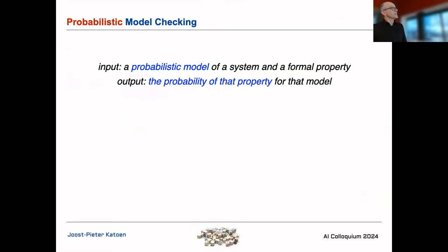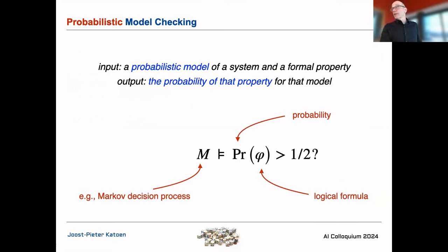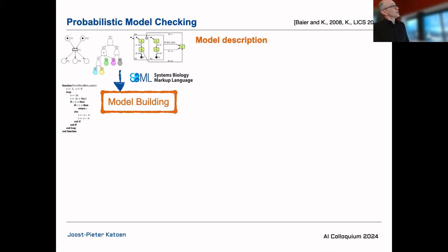Now I want to talk about probabilistic model checking. This doesn't mean the model checking process is probabilistic, but that the input is a probabilistic model — to deal with uncertainties. The output is the probability that the property holds. We have a logical formula and ask: does the probability that this formula holds exceed a certain threshold? The workflow starts with a model description — a Petri net, fault tree, program, or UML diagram — and some people even use it in biology.